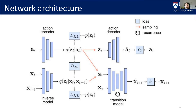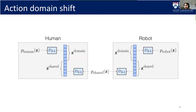When we have robot data, we make the output of the action encoder and inverse model be similar, and their output — a latent action — is used to train our transition model. When we only have human data with no actions, we use the inverse model on the human data and future states to get a latent action and train the transition model on human data. This allows the transition model, which represents the majority of the weights and complexity, to be trained from both kinds of data. However, people and robots look quite different and can move in different ways, so we learn priors that are either shared between domains or separated, allowing each domain to respond differently.